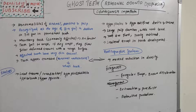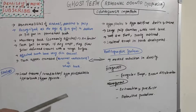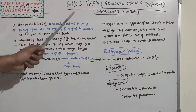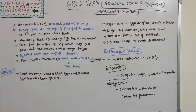Ghost teeth involve abnormalities of enamel, dentine, and pulp. The etiology is basically unknown, but could include local trauma, radiation, hypophosphatasia, hypocalcemia, and hyperpyrexia. Due to these reasons there will be abnormalities in enamel, dentine, and pulp. It is most commonly recognized at the age of tooth eruption — between two to four years in deciduous dentition.